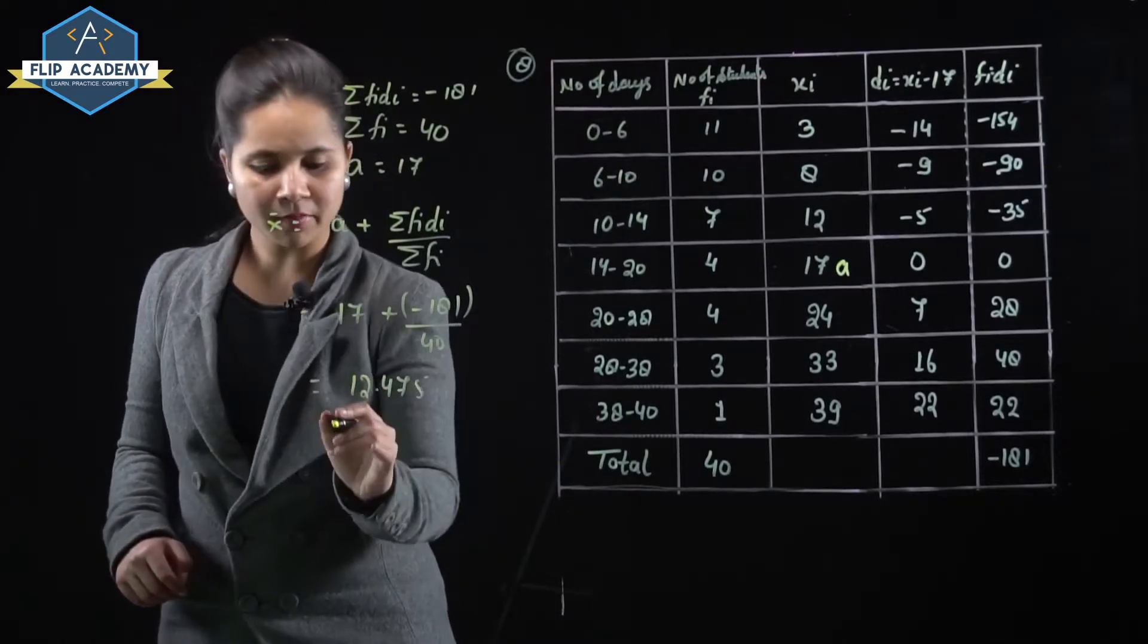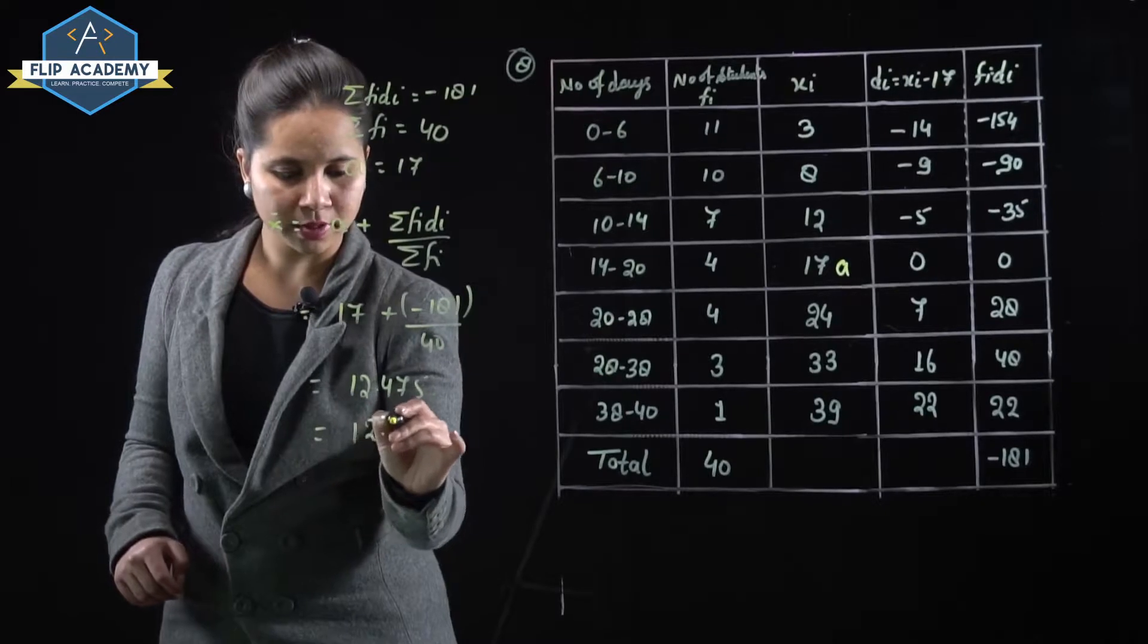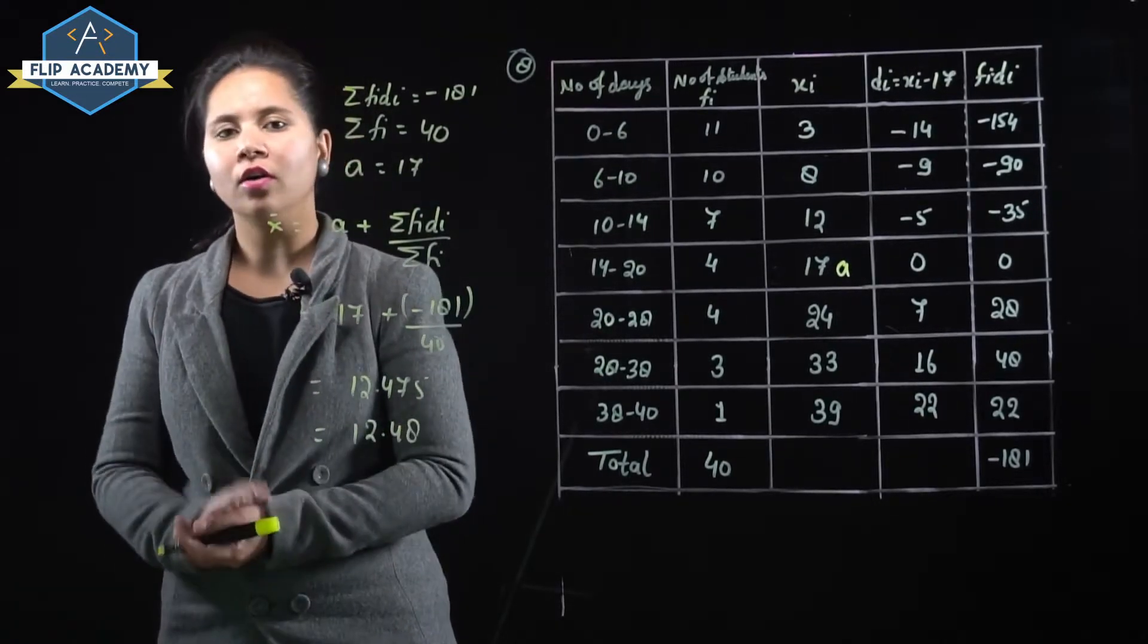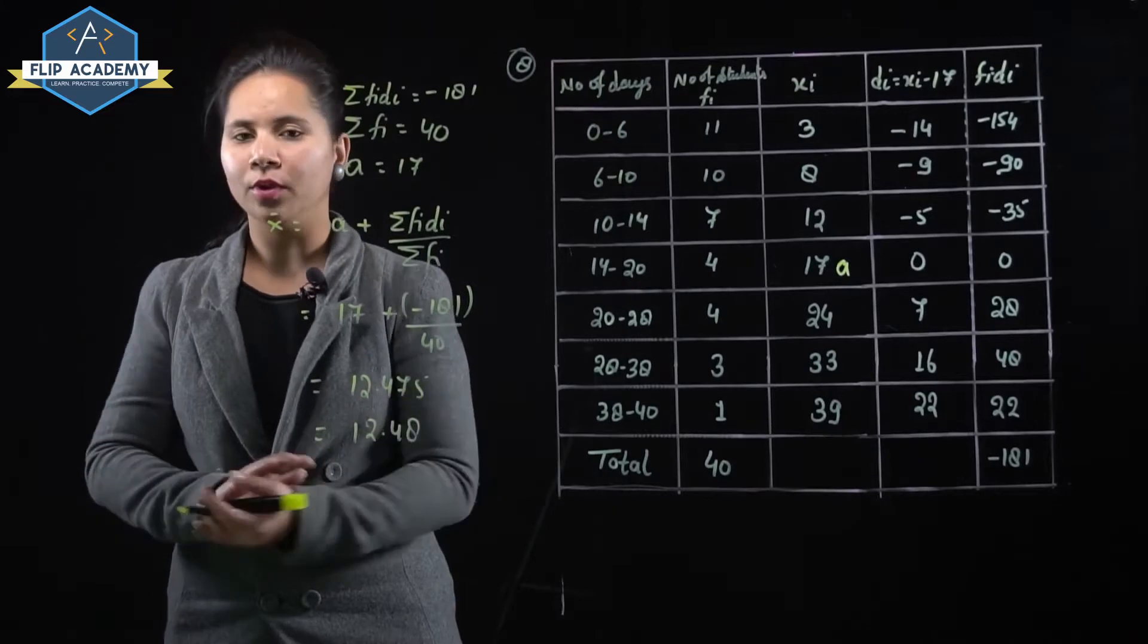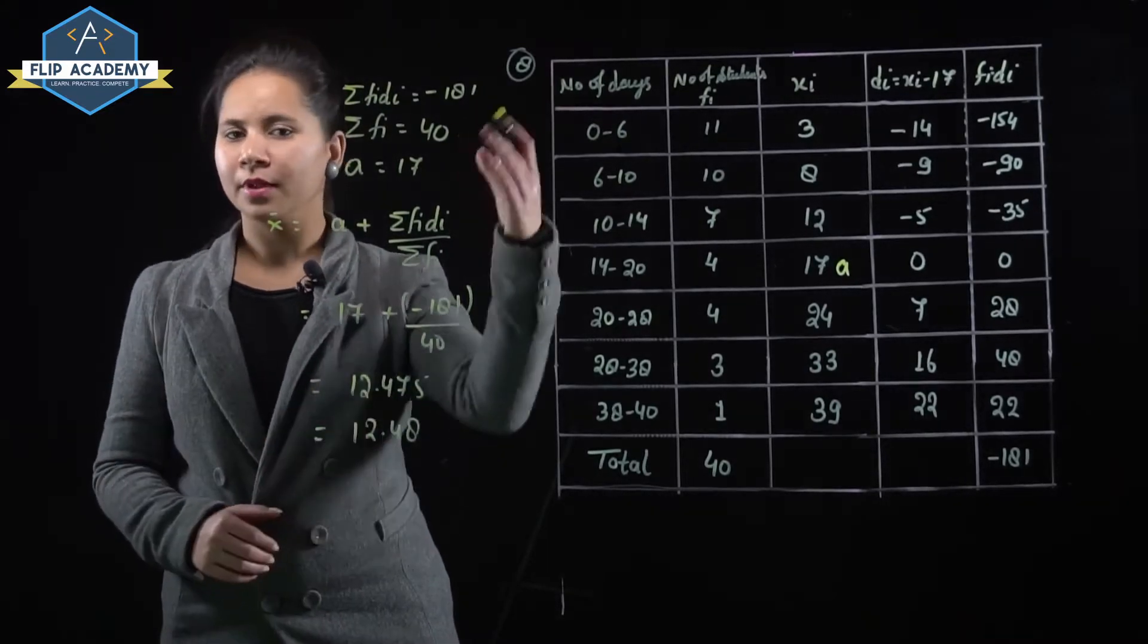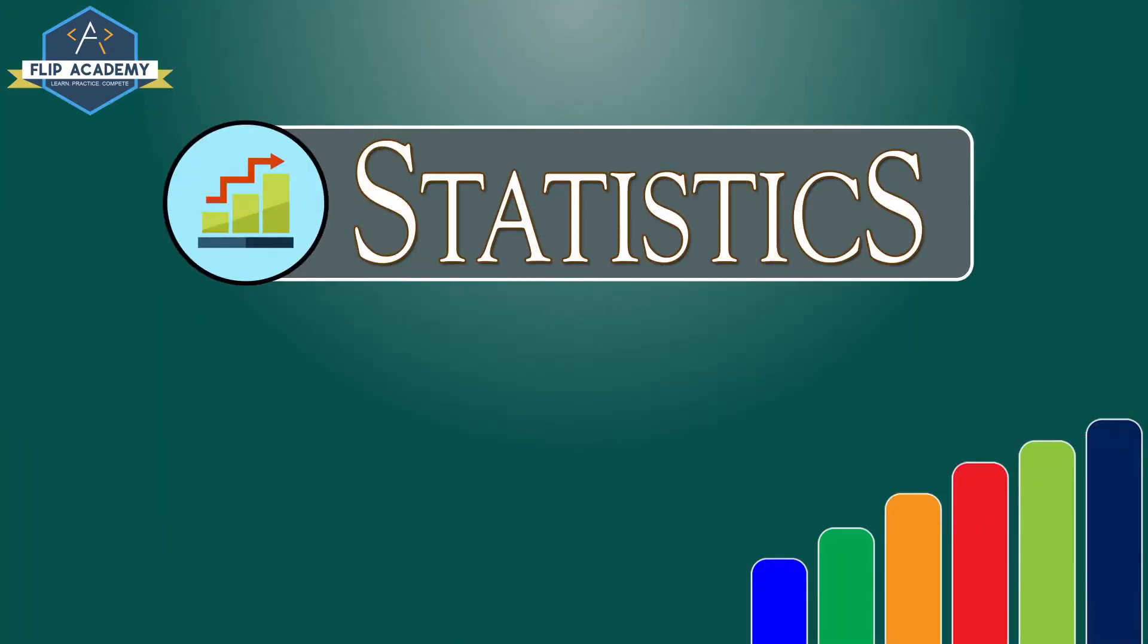Further simplified, it equals 12.48. So the mean number of days for which a student is absent equals 12.48. Question number 8 is complete. Statistics exercise 14.1, question number 9.